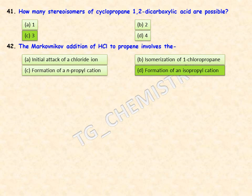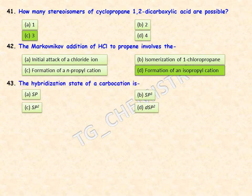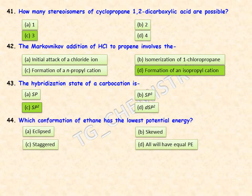The hybridization state of a carbocation is sp, sp³, sp², or dsp²? We know that in a carbocation the hybridization state is sp², as the carbocation is a planar structure. Option C — sp² — is the correct answer.